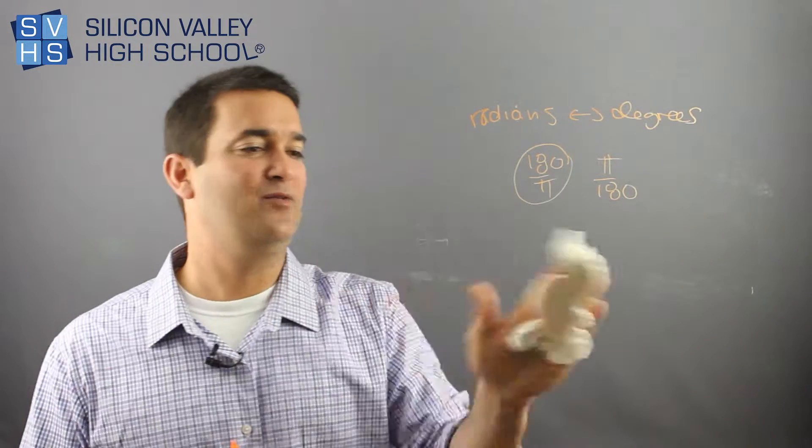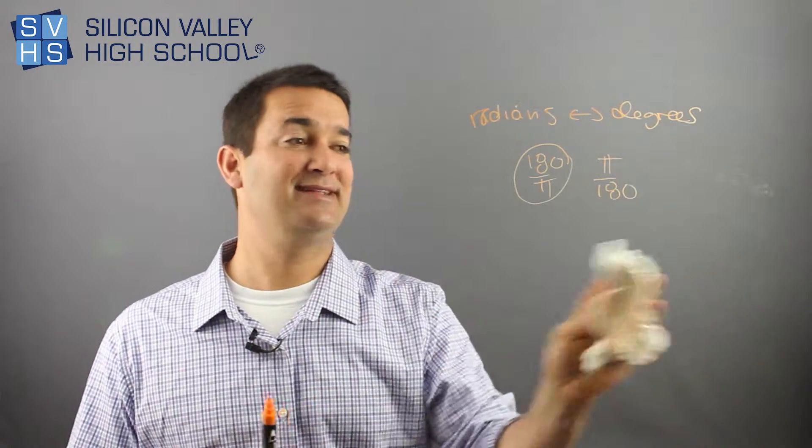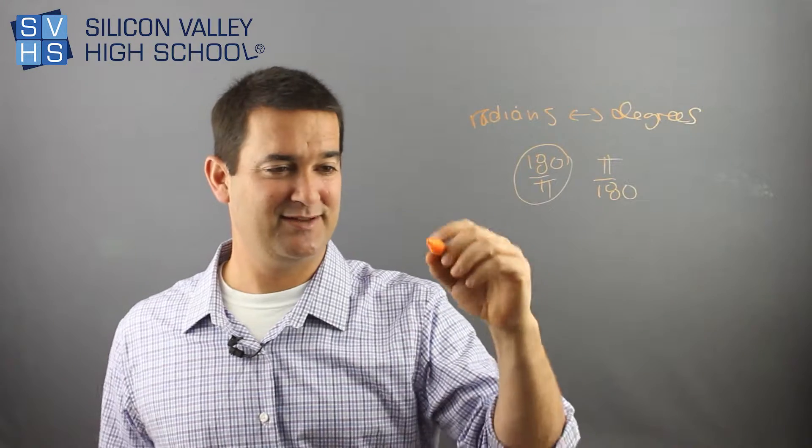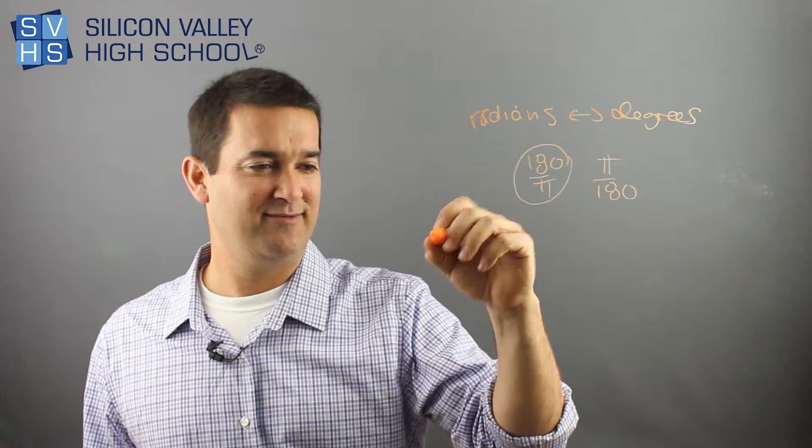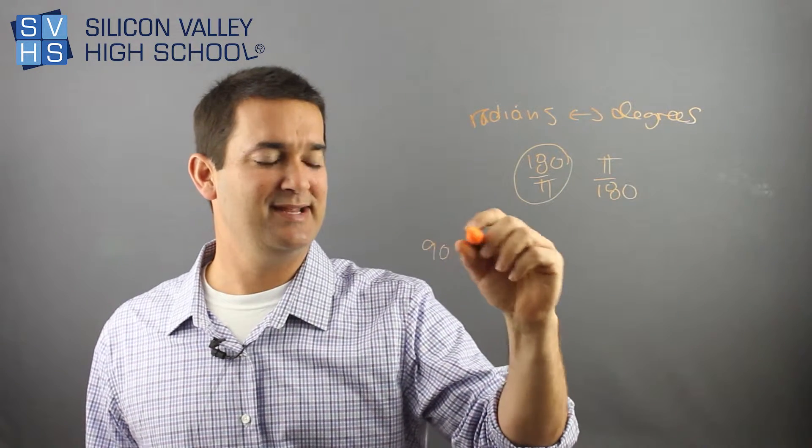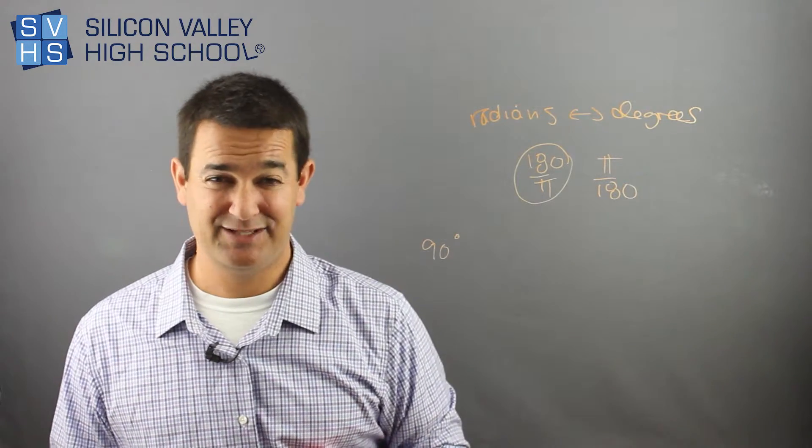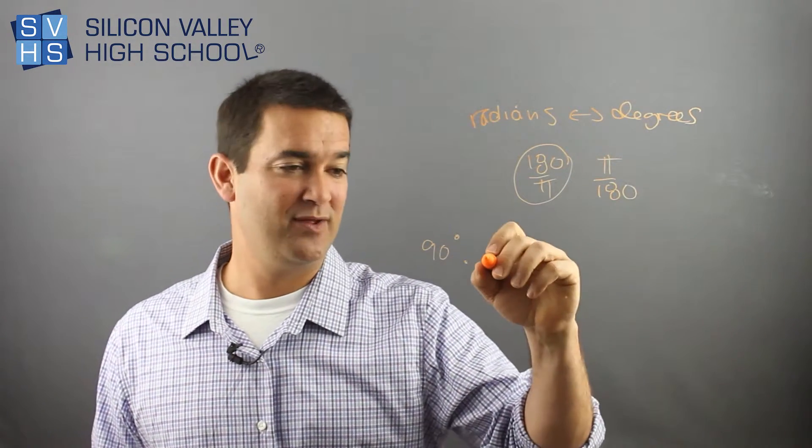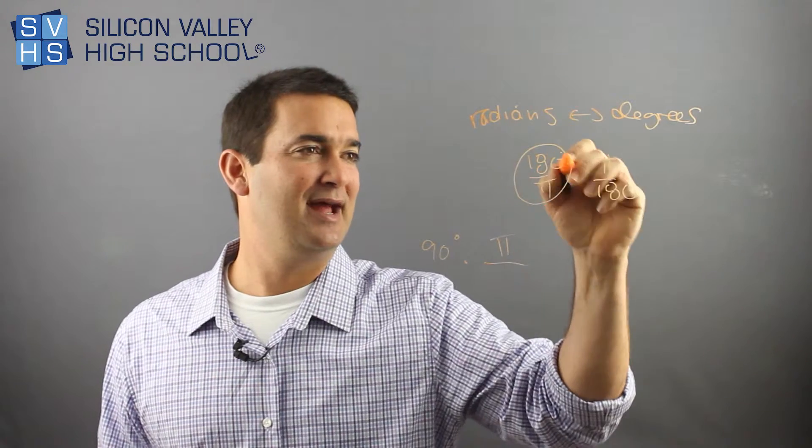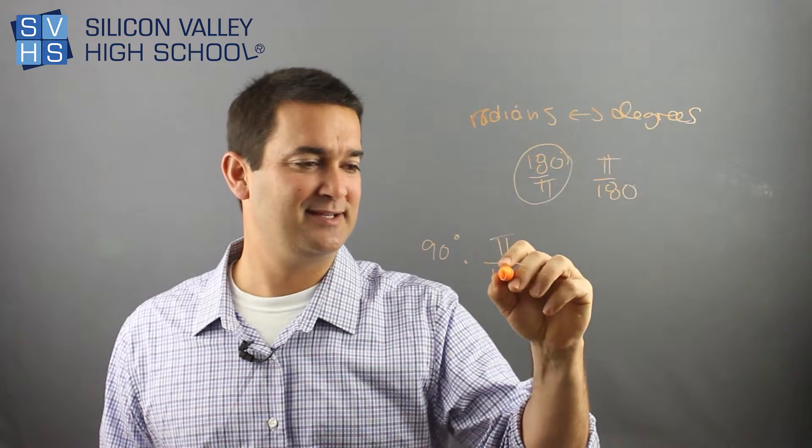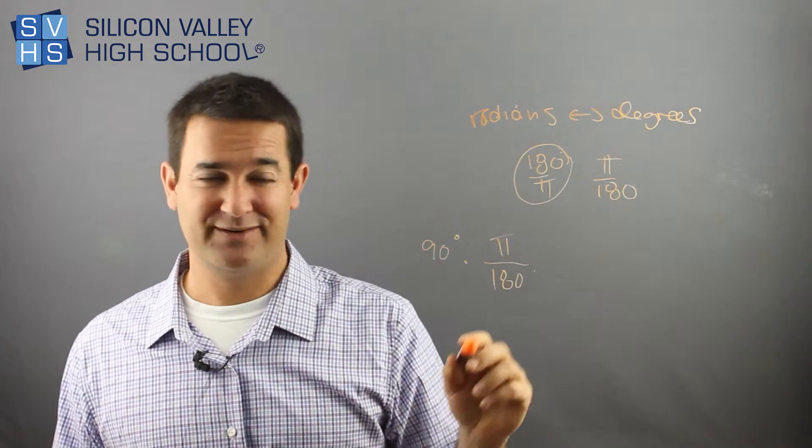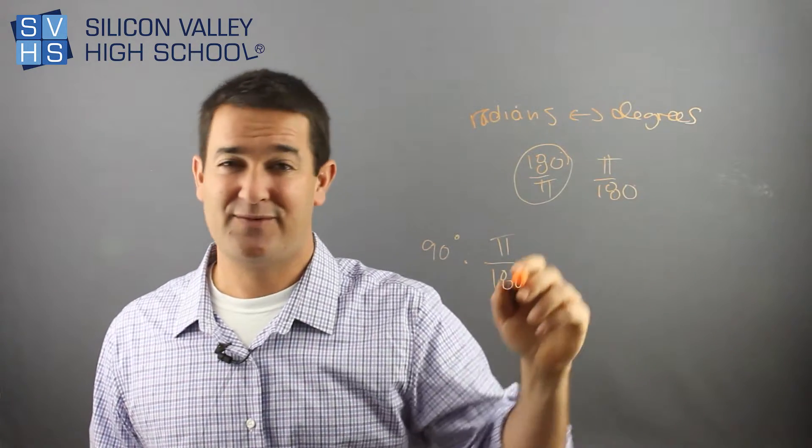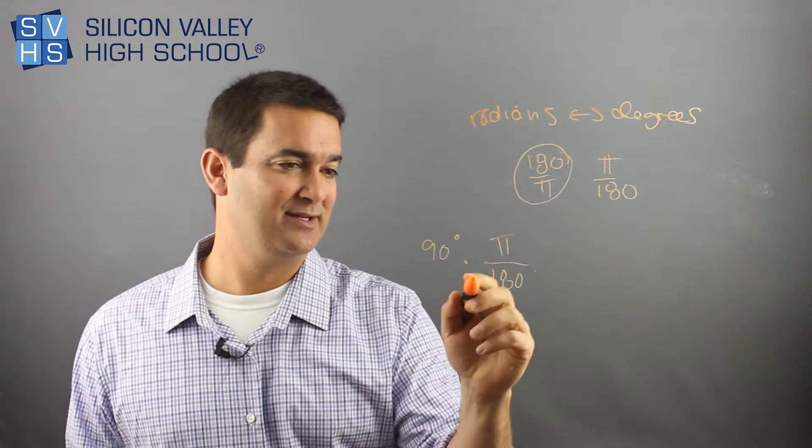So now let's say we want to go from degrees to radians, right? So now we're like, oh, this is confusing. Let's say I have 90 degrees and I want to put that into radians. In this case, you multiply it by the one where the pi is on top. And actually, another way to do it is to memorize it. It's to say I want to get rid of degrees. So the 180s of degrees, if I want to get rid of degrees, put it in the bottom. So look at this one.